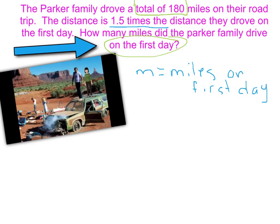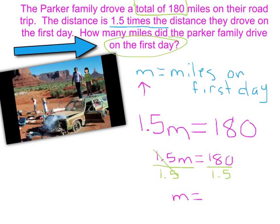Now we have to write the equation. The Parker family drove a total of 180 miles, and that distance is 1.5 times the distance they drove on the first day, which is our variable. So 1.5 times m gives you the total miles of the vacation, which is 180. To solve it, we divide both sides by 1.5, so m equals 120. That means on the first day they drove 120 miles.